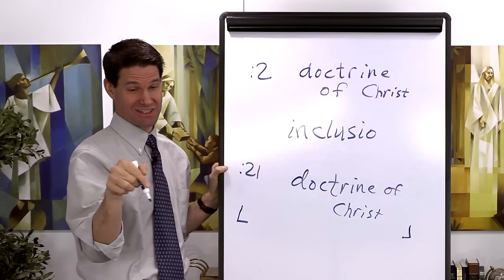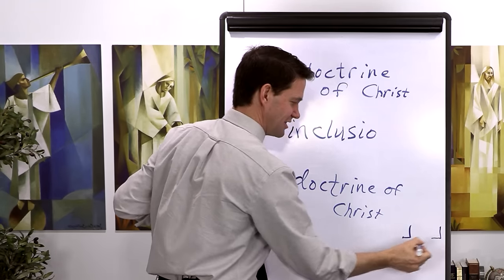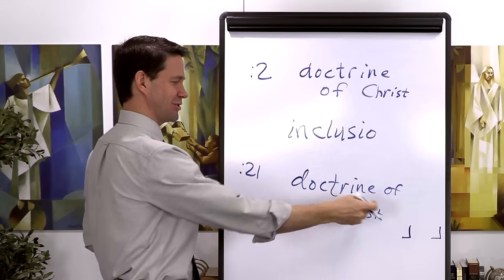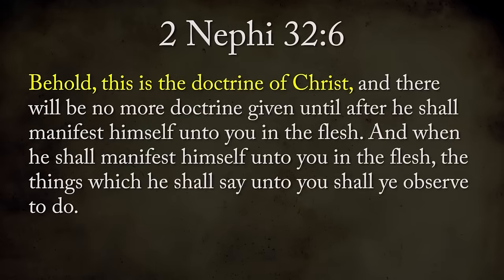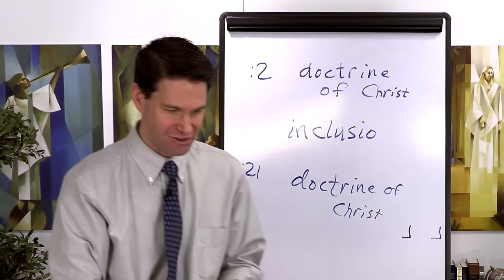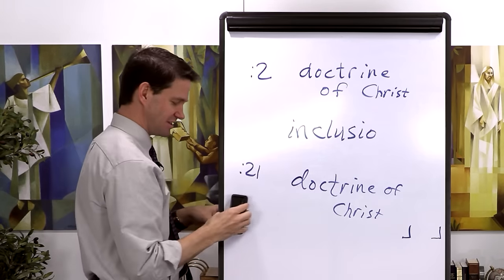In this particular case, Nephi gives a little sub-extension to the closing in chapter 32, verse 6, where he says again, 'Behold, this is the doctrine of Christ.' So you get two closers and one opener. With that foundation, let's dive in and look at the doctrine of Christ. Nephi tells us he's going to speak in plainness—he's just going to lay it out plainly.